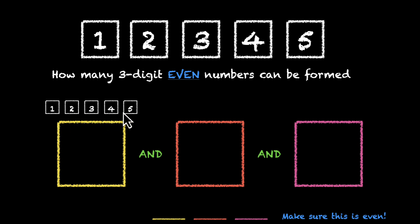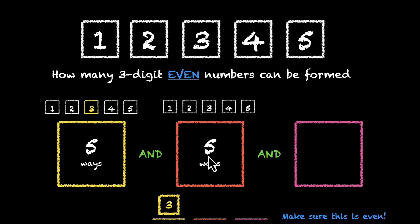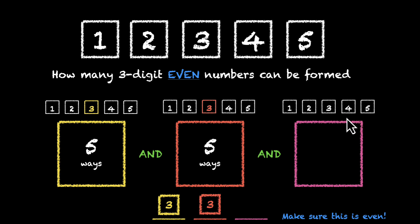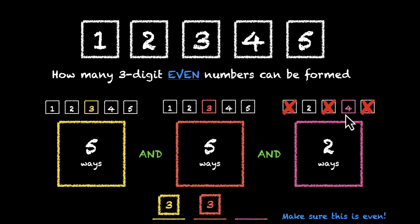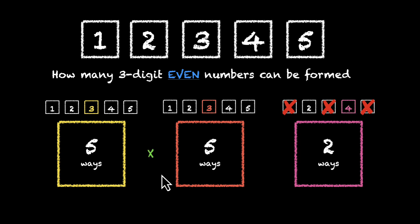For the yellow box we have 5 options: 1, 2, 3, 4, and 5 — so 5 ways. Let's say this box picks 3. For the orange box, this again has 5 options, so 5 ways — let's say it picks 3. For the last box, we have 5 options: 1, 2, 3, 4, 5. But we don't really have 5 options, because we want this box to be even, so we strike out all odd digits — no 1, no 3, no 5. That leaves only 2 real options, so 2 ways. Total: 5 × 5 × 2 = 50 ways.